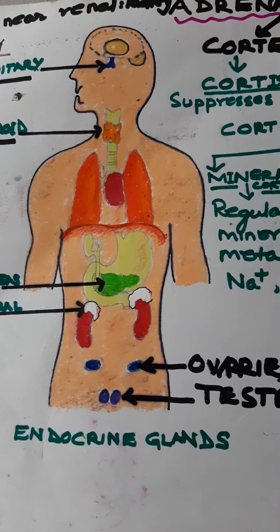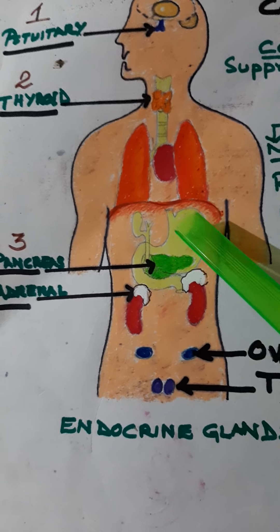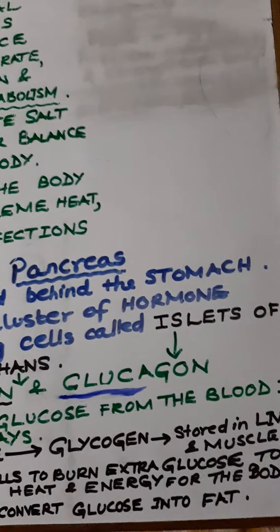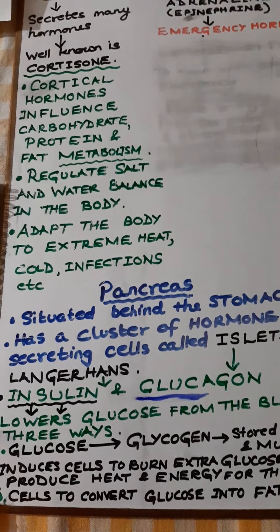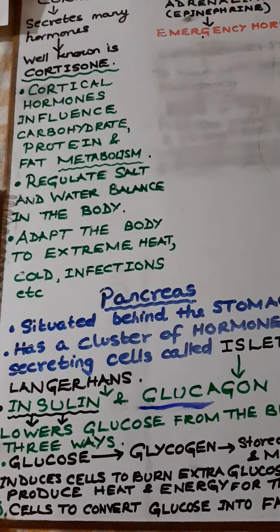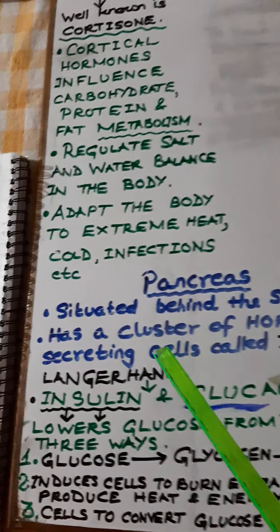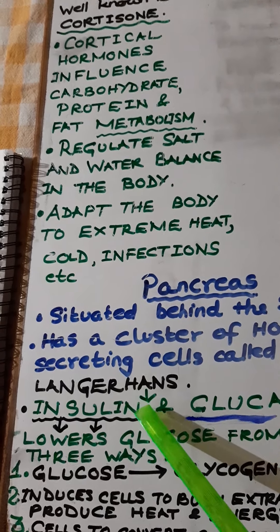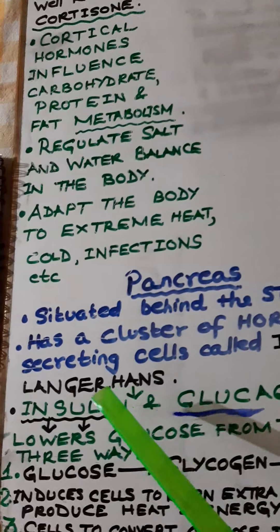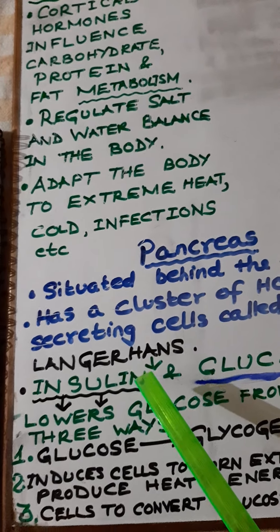Now we come to the next endocrine gland: the pancreas, situated just behind the stomach. The pancreas has a cluster of hormone-producing cells called islets of Langerhans. These cells produce two hormones: insulin and glucagon.